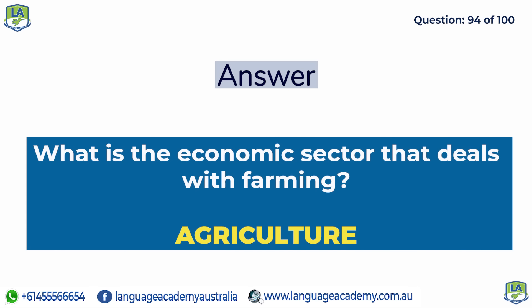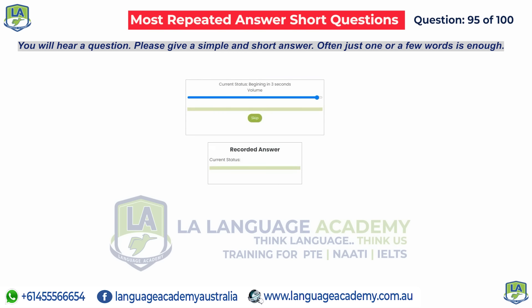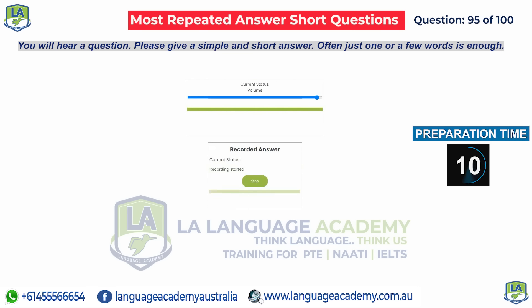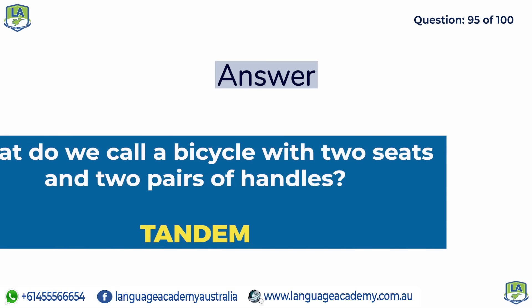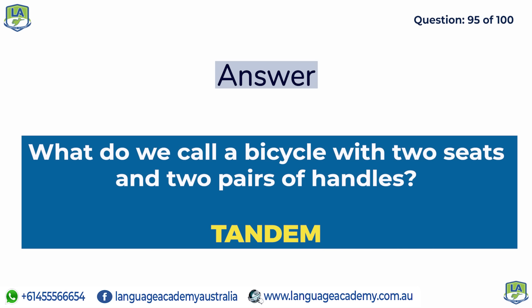What is the economic sector that deals with farming? Agriculture. What do we call a bicycle with two seats and two pairs of handles? Tandem.